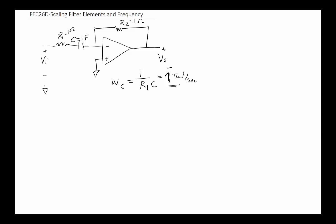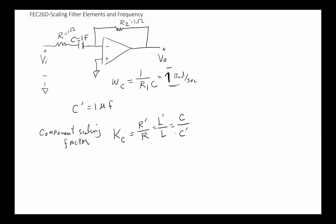Let's say we want to scale the components — for example, instead of a one farad capacitor, we want a one microfarad capacitor. There is a concept called the component scaling factor, K_C. As long as you keep these ratios, you will not change the behavior of your filter. The ratio of R' over R must equal L' over L, and C over C' — note the capacitor ratio is reversed.